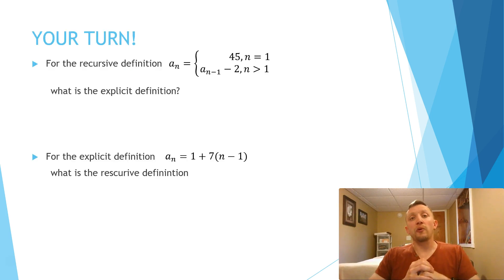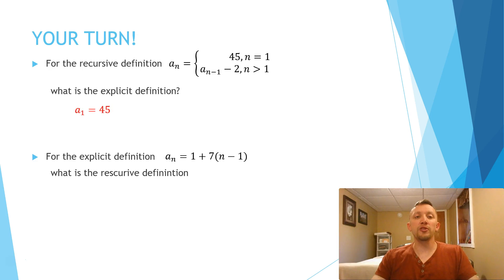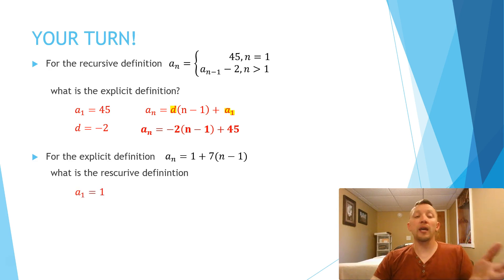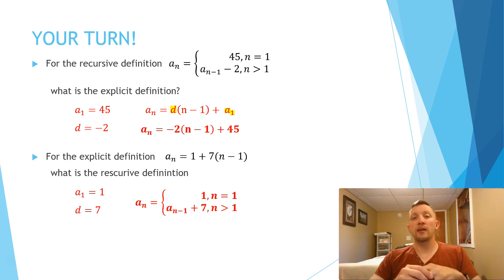It's your turn now. Take the recursive formula and write it as an explicit formula, and for the following example — already written as an explicit formula in the book's format — write it as a recursive formula. Pause and hit play when you're ready to check. For the first one, the first term is 45 and constant difference is negative 2, so the explicit formula is negative 2 times (n minus 1) plus 45. For the second one, the first term is 1 and constant difference is 7, giving a recursive formula: a-sub-n equals 1 for n equals 1, and a-sub-(n minus 1) plus 7 for n greater than 1.